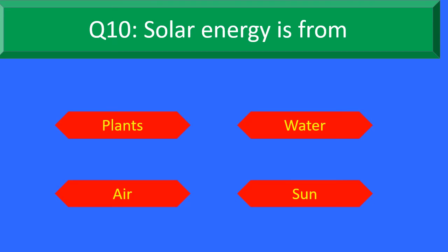Moving to question number 10. Solar energy is from — Option A: Plants, Option B: Water, Option C: Air, and Option D: Sun.